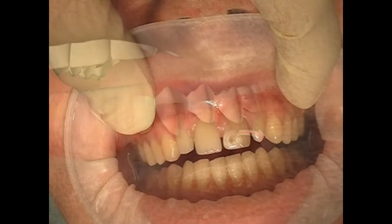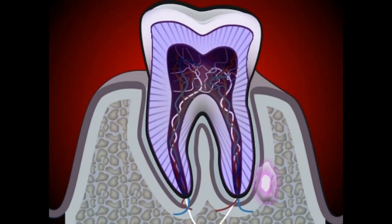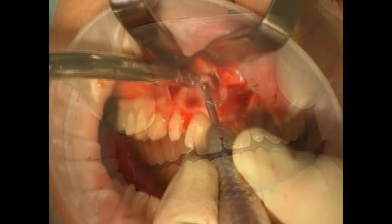You will now see a cystectomy, or removal of a radicular cyst. The cause of the cyst was a badly performed root canal treatment on the anterior number one tooth — more on that in the video on cyst formation and radicular cysts. The root canal treatment was renewed prior to the operation in order to prevent any further cyst formation after the cystectomy.